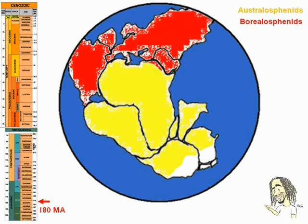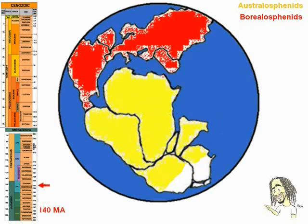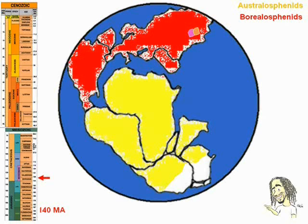140 million years ago, we are in the Cretaceous period, and the continents of the north and south were separated from each other, maintaining just a single point of connection between the Americas. Among other lineages totally extinct today, the Borealosfenites were divided — probably in some point of China — into two principal groups: the marsupials, marked here in brown, and the placentals, marked here in pink.